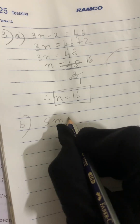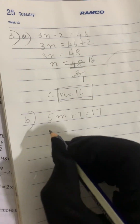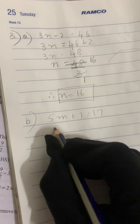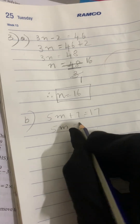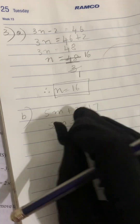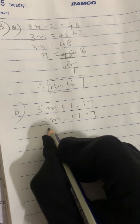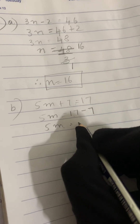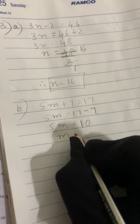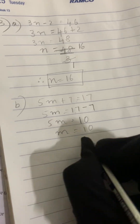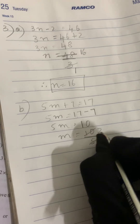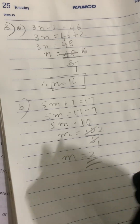Now let's solve the B question: 5m plus 7 equals 17. Shift plus 7 to the numbers place — it becomes minus 7. So 5m equals 17 minus 7, which is 10. Take out m: m equals 10 divided by 5. 5 twos are 10. Therefore m equals 2 is our final answer.